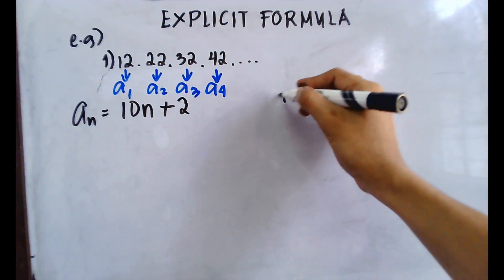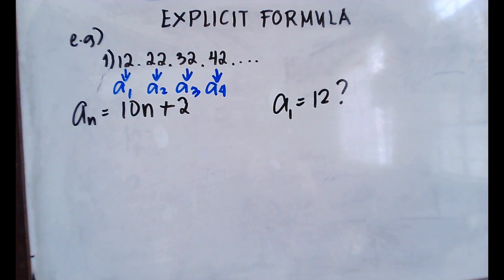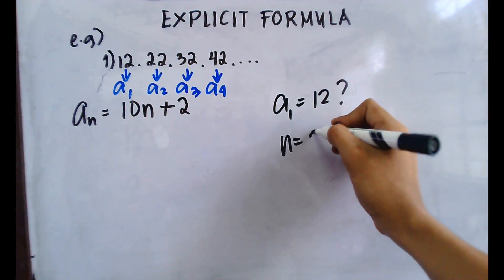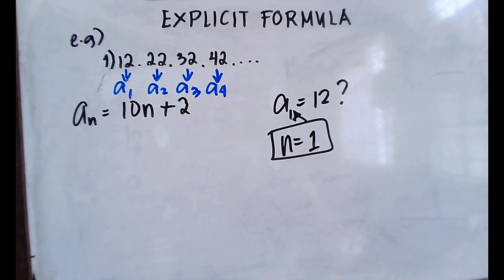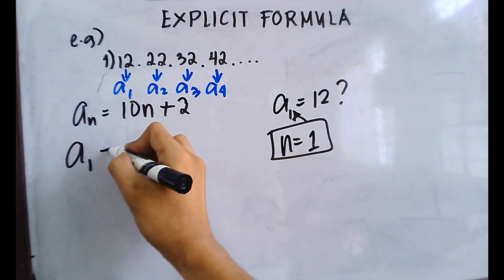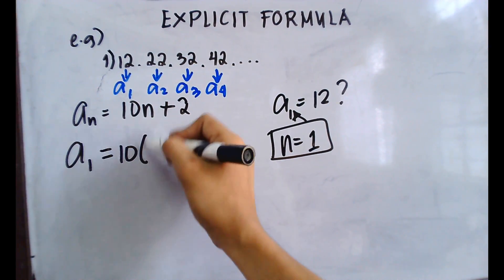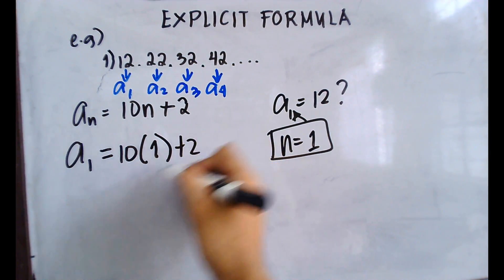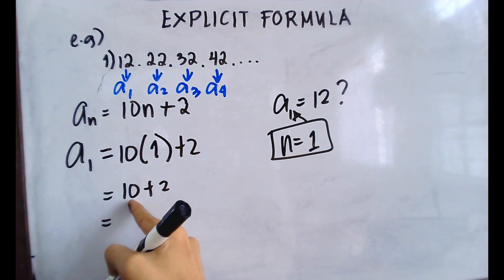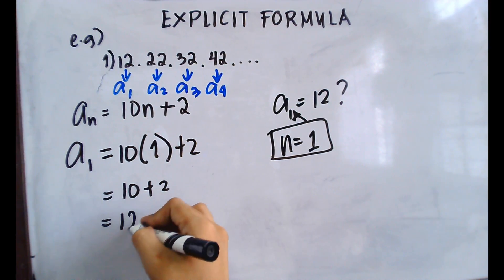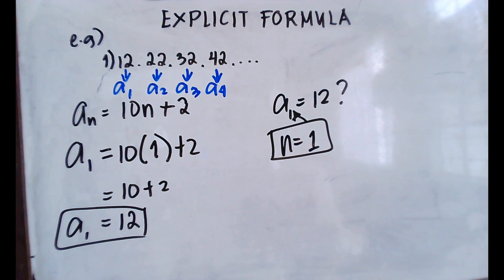Let's check if a sub 1 is really 12 using the explicit formula. Substituting n equals 1: a sub 1 equals 10 times 1 plus 2, which is 10 plus 2, which equals 12. So a sub 1 is 12 — that's correct.